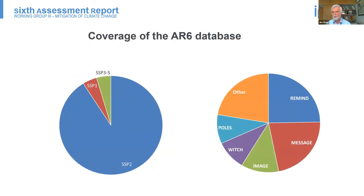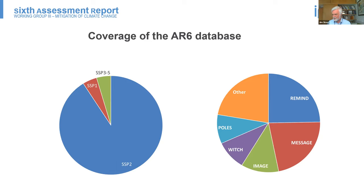One of the issues we need to address is the question of inclusiveness and diversity of the scenarios assessed. Of the 1,202 global scenarios in the AR6 database, more than 90% were based on the middle-of-the-road shared socioeconomic pathway SSP2, with a very small percent based on SSP1 sustainable development and even smaller amounts on other SSPs. There is also a big bias in terms of the different models or modeling families included — more than three-quarters of the scenarios were accounted for by only five models, all supported by the European Commission.